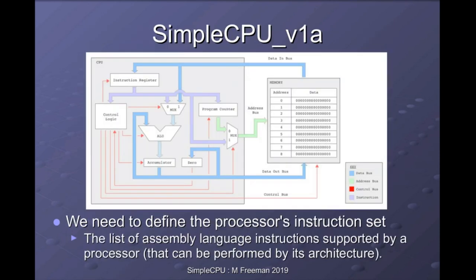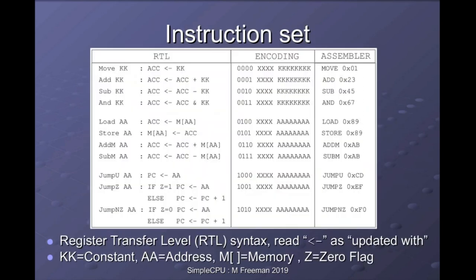At this point we have some design decisions to make: what instructions do we want our processor to use? That's very much dependent on its application domain. For the simple CPU they are simple instructions — we have 11 basic instructions arranged loosely by their addressing mode: immediate, absolute, and direct. This table shows the assembly language syntax, the RTL (register transfer level) descriptions, the binary encoding showing the bit fields with opcodes and operands, and examples of how they'd be used in a program.